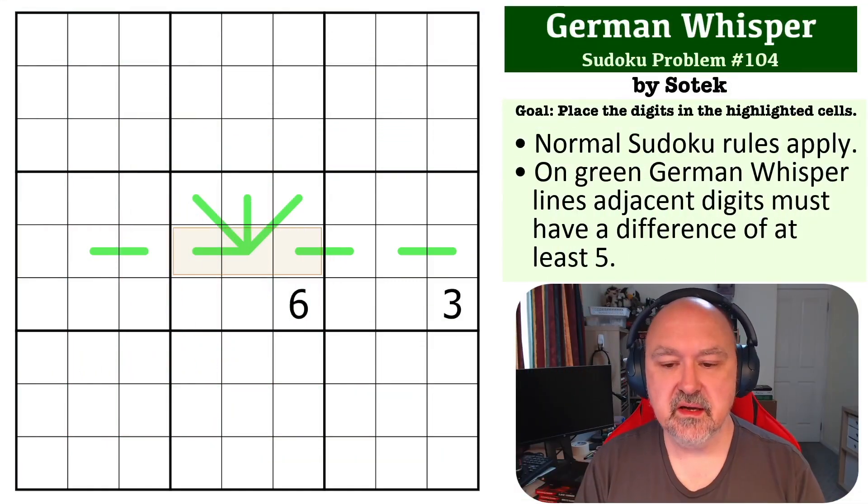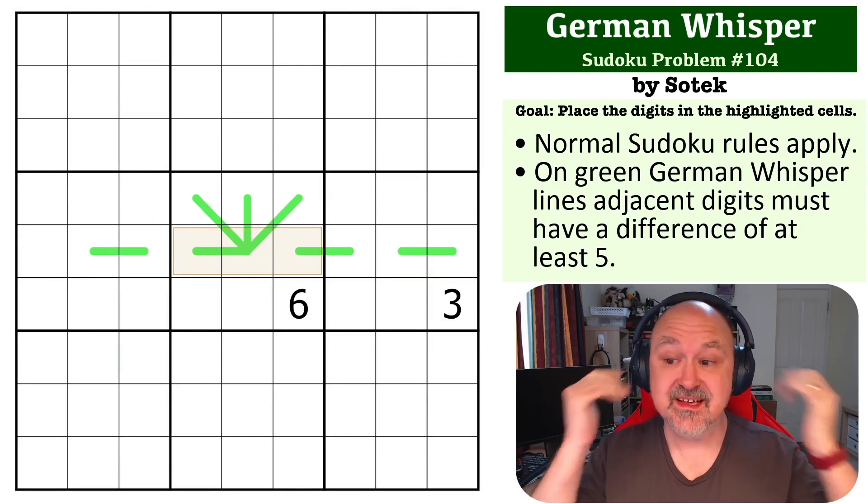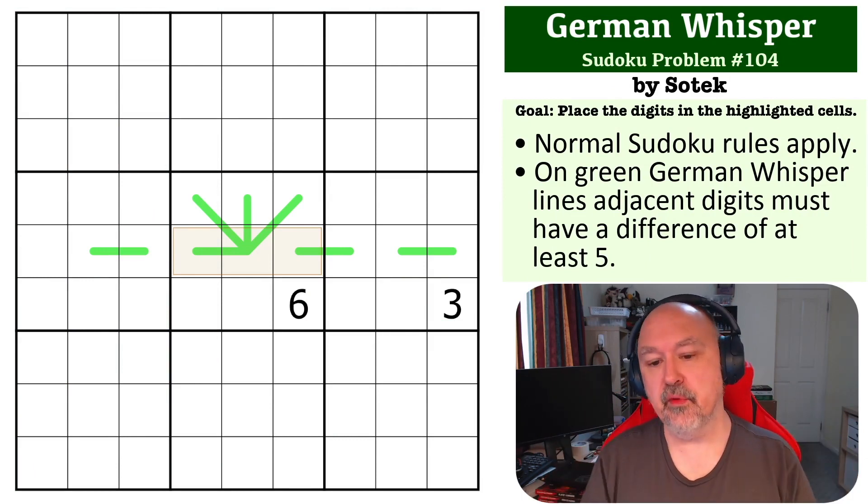Hey everyone, this is Bremster, and this is number 104 in the Sudoku Problems series. This is a German whisper problem created by Sotek, based around an idea I know he's been exploring.